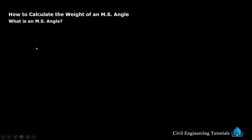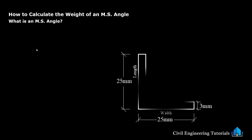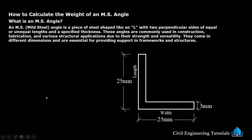First, we have to understand what is an MS angle. An MS or mild steel angle is a piece of steel shaped like an L, with two perpendicular sides of equal or unequal length and a specified thickness. These angles are commonly used in construction, fabrication and various structural applications due to their strength and versatility. You can see here: this is length, this is width, and this is thickness.